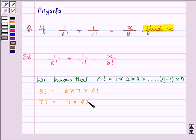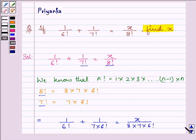Now substituting the values in the expression, we have 1 divided by 6 factorial plus 1 divided by 7 multiplied by 6 factorial is equal to x divided by 8 multiplied by 7 multiplied by 6 factorial. What we did here is we substituted the values of 7 factorial and 8 factorial that we found into the given expression.